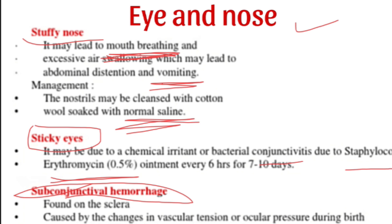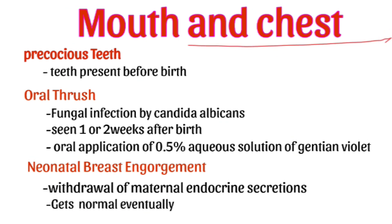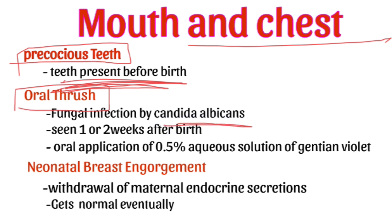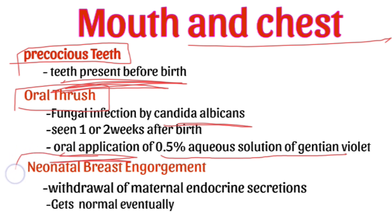Next, mouth and chest. Precocious teeth is a very rare condition where teeth are present in the baby's oral cavity before birth — no need to worry, they will fall off eventually. Oral thrush is infection in the oral cavity due to Candida albicans, seen in the baby around the first or second week. Treatment is a 0.5% aqueous solution of gentian violet.